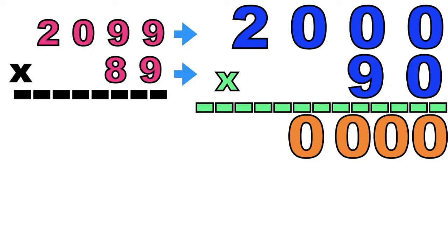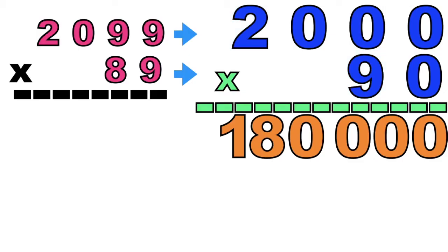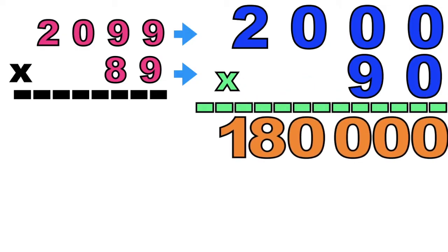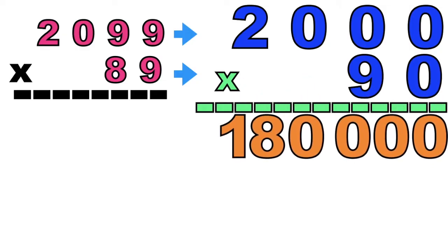So let's multiply the non-zero digits. 9 times 2 equals 18. So the estimated product of 2,099 and 89 is 180,000.